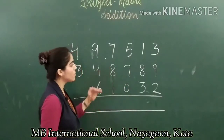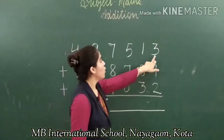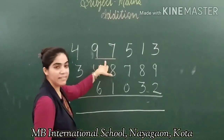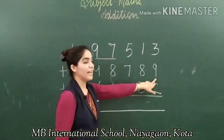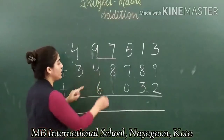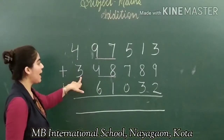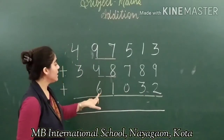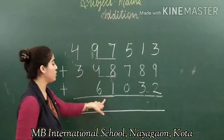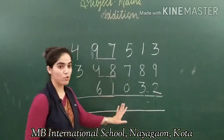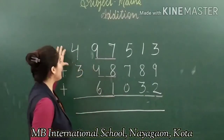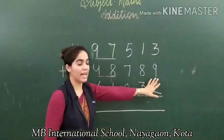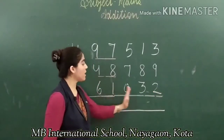The next sum has three addends. Reading: ones, tens, hundreds, thousands, ten thousands, lakh — four lakh, ninety-seven thousand, five hundred, thirteen. Second addend: three lakh, forty-eight thousand, seven hundred, eighty-nine. Third addend — ones, tens, hundreds, thousands, ten thousands; hundred place is empty — sixty-one thousand, thirty-two. So first addend: 4,97,513; second: 3,48,789; third: 61,032.